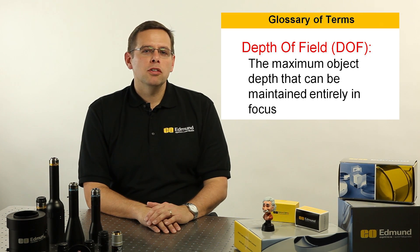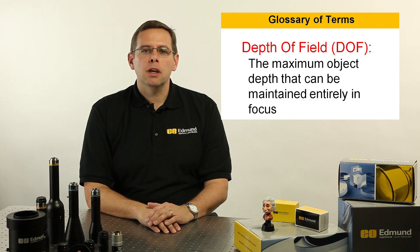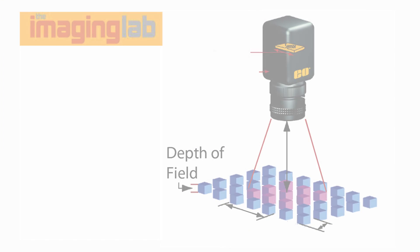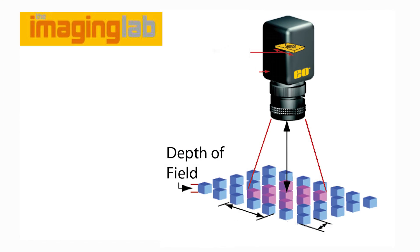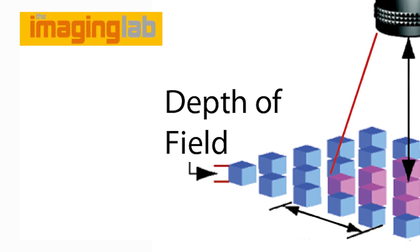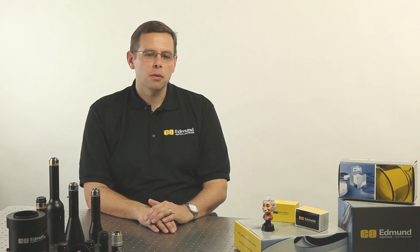One imaging system can have a great depth of field for one application and not enough for another. There are even applications that require very, very little depth of field, if any at all, to eliminate the blur of anything in front of or behind the objects of interest. A lot of medical applications are like that.